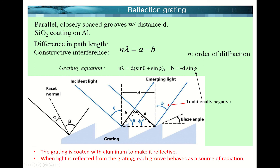In optics, angles are defined with respect to the facet normal — a perpendicular line drawn to the surface. The incoming angle is the angle of incidence, and the outgoing angle is the angle of reflection. You might ask: doesn't the law of reflection require that the angle of incidence equals the angle of reflection? Here they appear different.